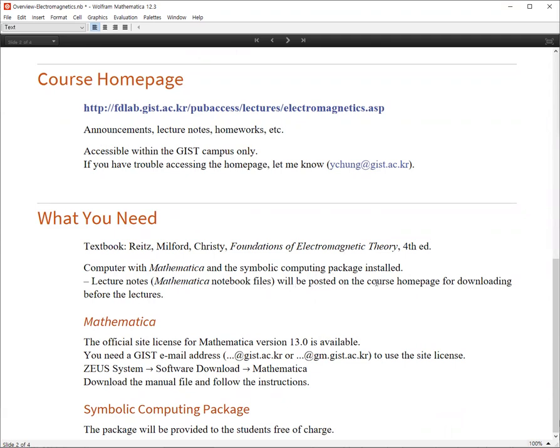And they will be posted on the course homepage for downloading before the lectures. For Mathematica, the official site license version 13.0 is available. And you need a GIST email address with GIST.AC.KR or GM.GIST.AC.KR to use the site license. For installation, you can go to the GIST system, then go to software download and you will see Mathematica.